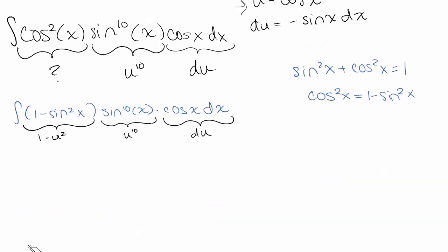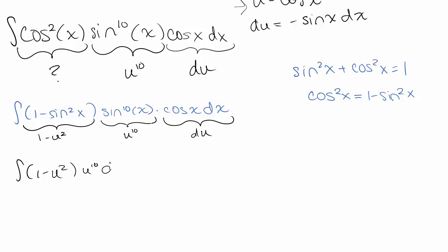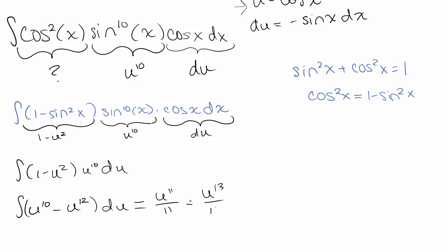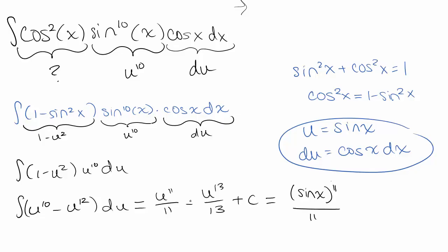Writing this in terms of u, we get the integral of (1 minus u squared) times u to the tenth du. Distributing gives us u to the tenth minus u to the twelfth du, and that's something we know how to integrate. We get u to the eleventh over 11, minus u to the thirteenth over 13, plus C. Converting back to x's — remember we used u equals sine of x — we get sine of x to the eleventh over 11, minus sine of x to the thirteenth over 13, plus C.